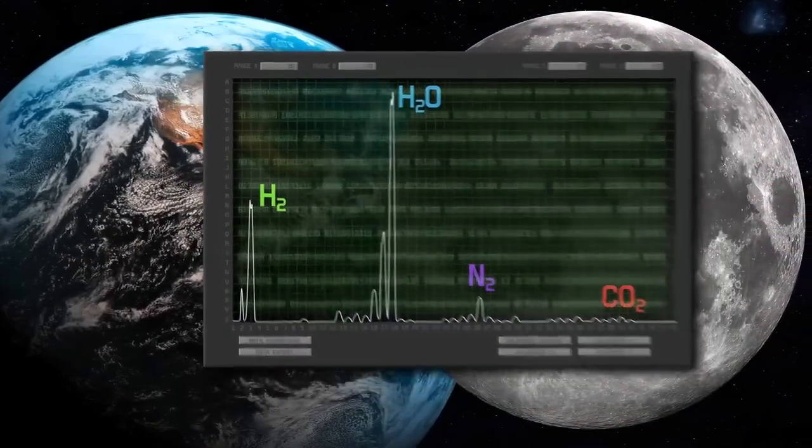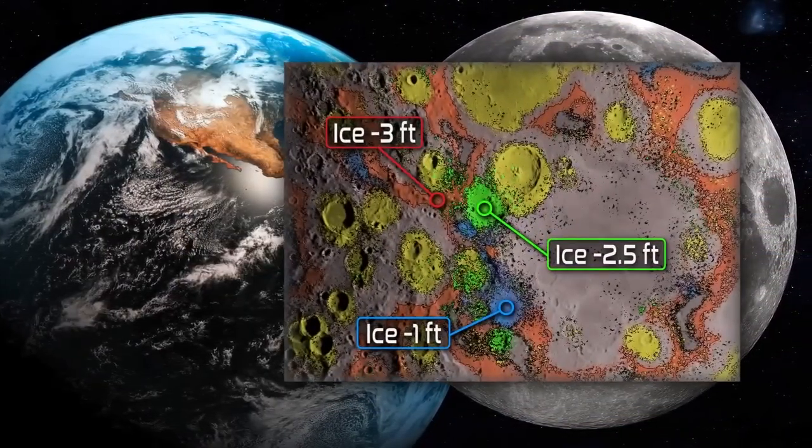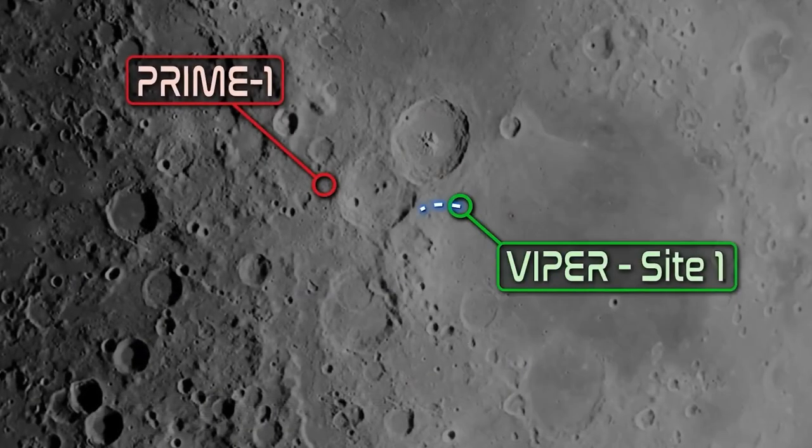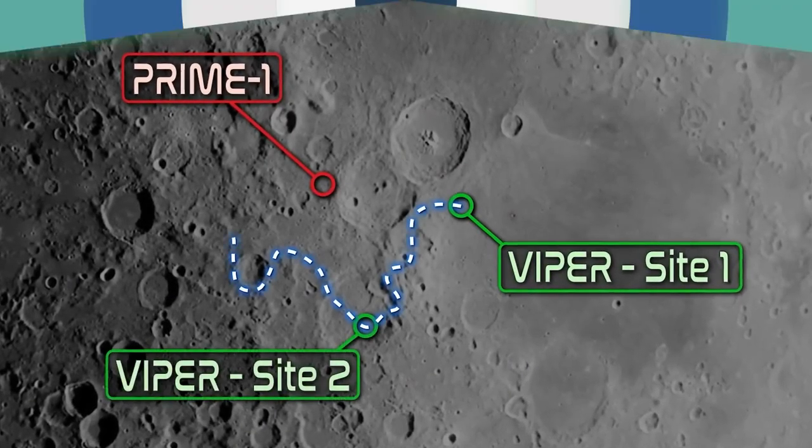The objective of PRIME 1 is to inform NASA's plans for mining resources on the lunar surface, as well as mission operations for a future NASA lunar rover mission called VIPER. So how will we extract water on the moon?